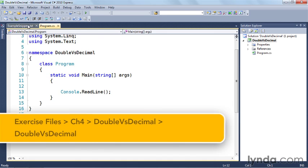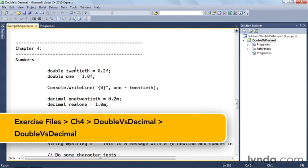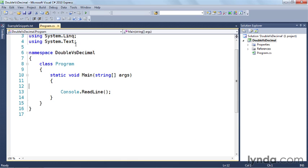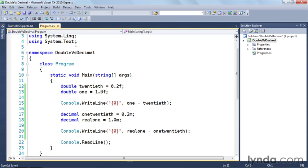So I've got my double versus decimal project open here. And here's the program file, and I've got my snippets open as well. So what I'm going to do is copy these lines of code over to my main function.